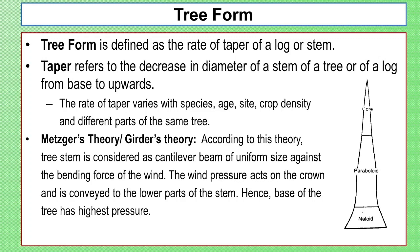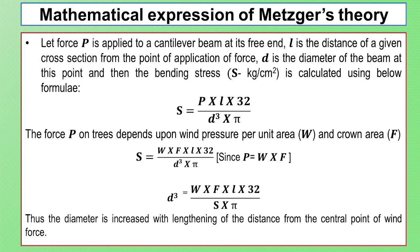This is the concept and mathematical expression of Metzger's theory explaining why the tree has taper. If P is applied to a cantilever beam at its free end, L is the distance of a given cross section from the point of application of force, D is the diameter of the beam at that point, then the bending stress S is calculated in kg per centimeter square.